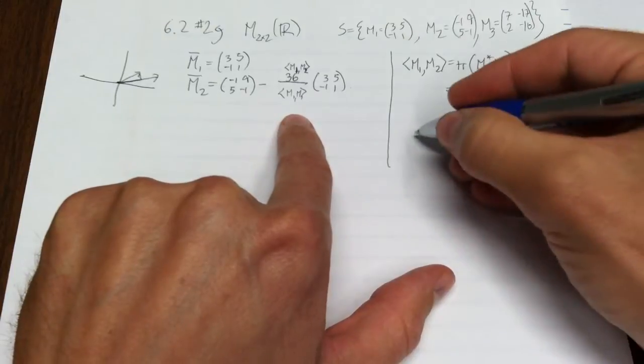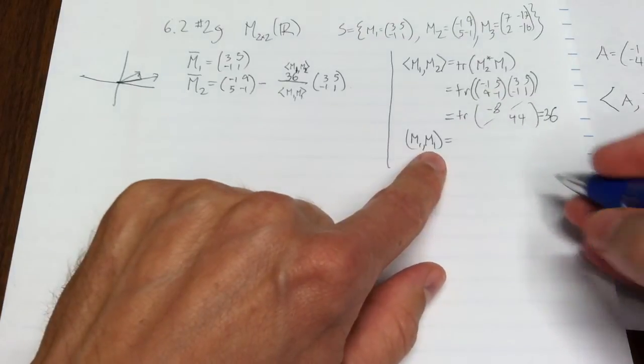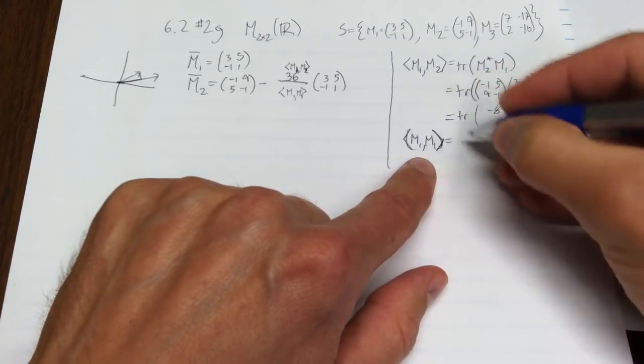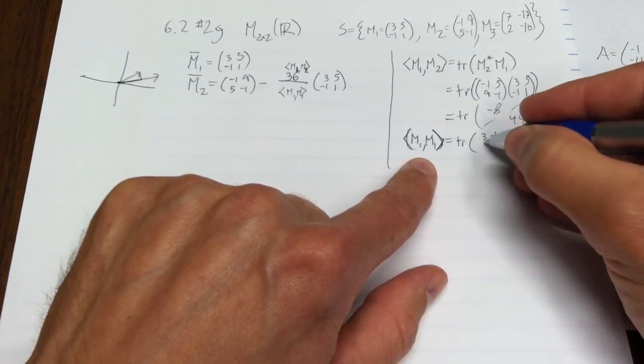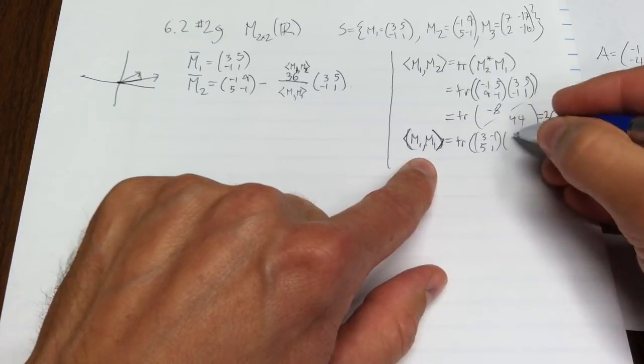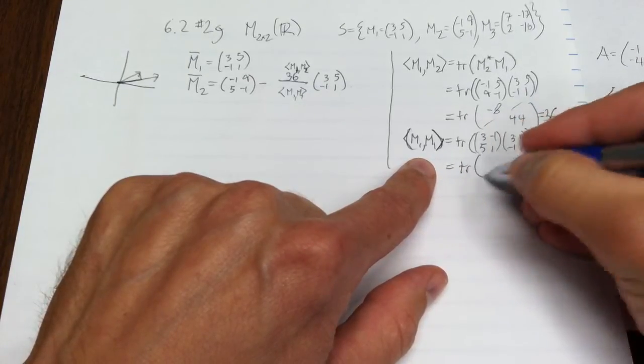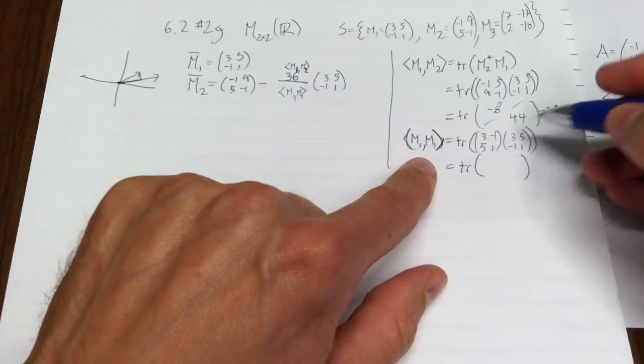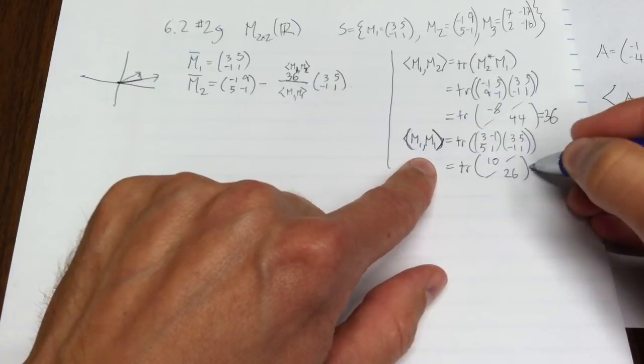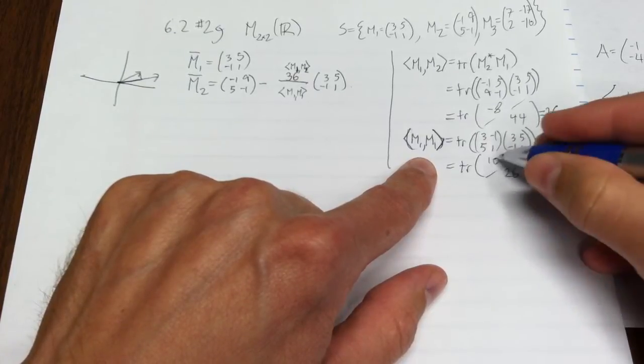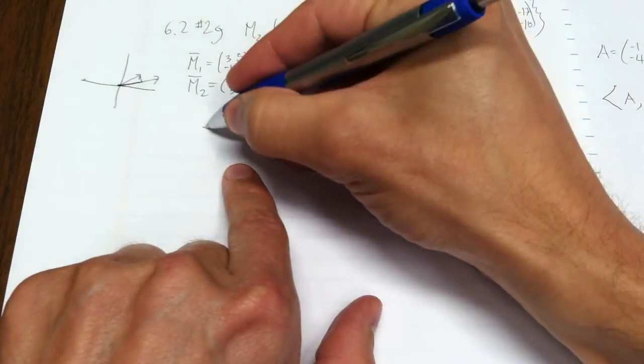Now I have to do the inner product of m1 with m1. That's the trace of (3, -1, 5, 1) multiplied by (3, 5, -1, 1). So the trace, let's see, in the upper right entry it's 10. Don't care about that, don't care about that. Then we have 26. Hey! So the trace of that is also 36, 10 plus 26. 36 over 36, that works pretty good. Those cancel.